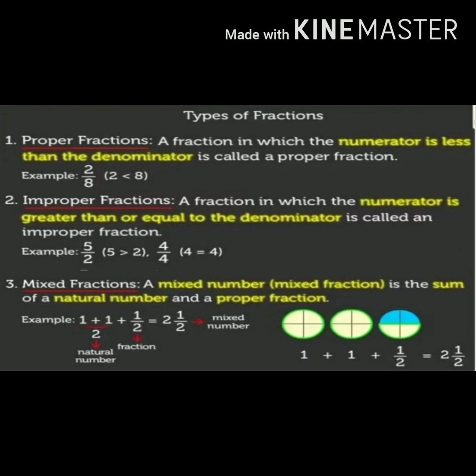Third, mixed fraction. A mixed number is the sum of a natural number and a proper fraction. For example, 1 plus 1 plus 1 upon 2 is equal to 2 whole 1 upon 2. Here 1 plus 1 equals 2, which is the natural number, and 1 upon 2 is the proper fraction. The combination of a natural number and a proper fraction, that is 2 whole 1 upon 2, is called a mixed fraction.